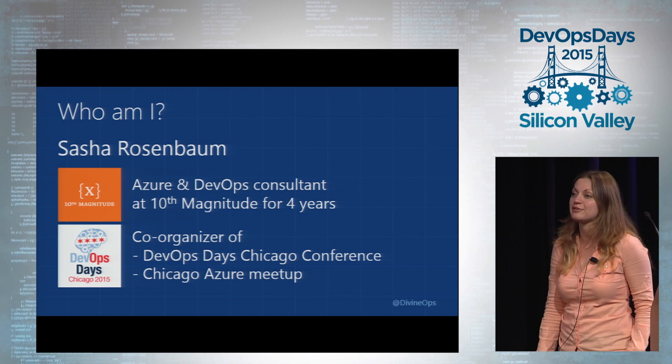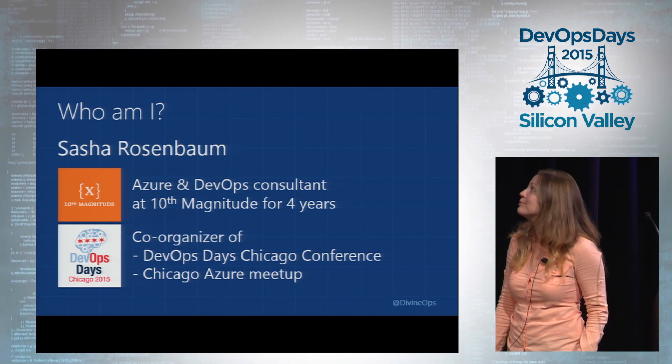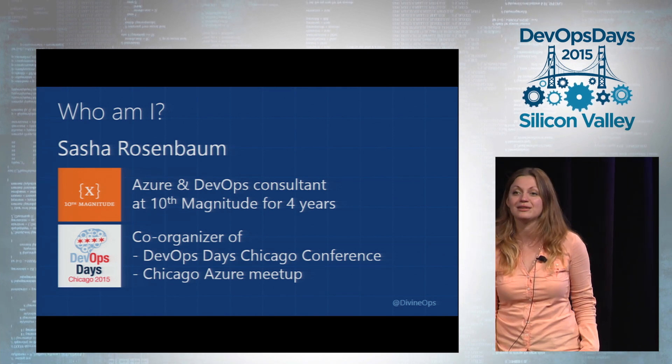My talk is directly related to the previous talk, but from a different point of view. My name is Sasha. I live in Chicago. I was born in Ukraine, grew up in Israel, and then moved to Chicago because I missed the winter so much. I work at Tenth Magnitude, a Chicago-based cloud consulting company. We do cloud consulting, work mainly with Microsoft Azure, help people develop CI/CD pipelines, and automate infrastructure with Chef.